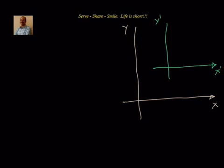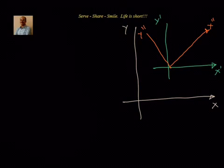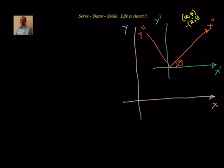After that, at this particular point, these coordinate axes are now rotated by an angle theta. Now, suppose there is a point with coordinates x, y in the old system, and in the new system, let us say the same coordinates are given by x dash and y dash.